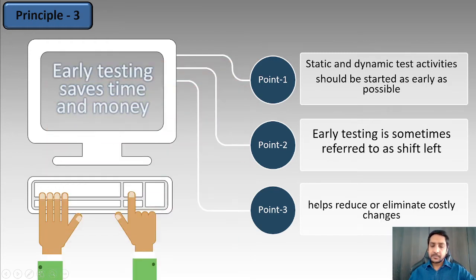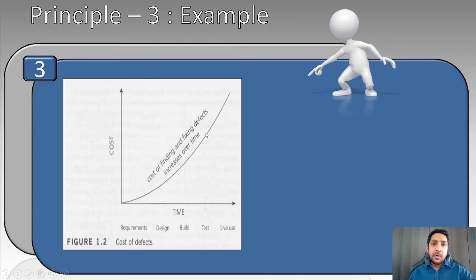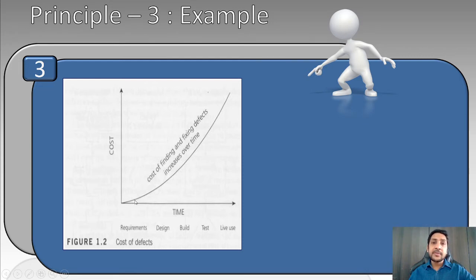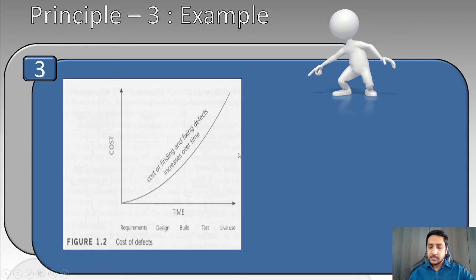This is illustrated by a popular graph of cost versus time. You can see all stages: requirement, design, build, testing, and live use — when the customer is using the product. If you find a defect at the requirement stage, the cost is very low. As you move to design or build, cost increases. If found at test stage or live use, cost increases exponentially. So the cost of finding and fixing a defect increases over time — the more you delay, the more costly it becomes.